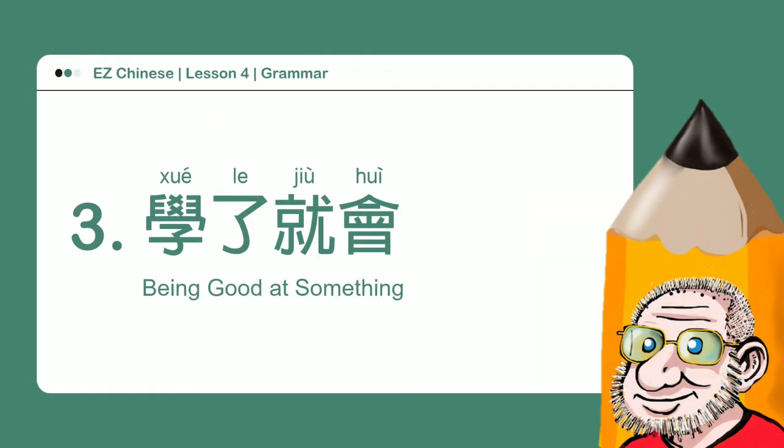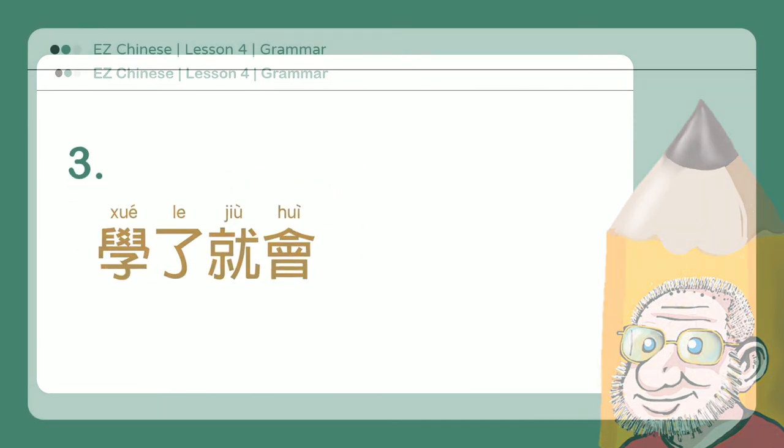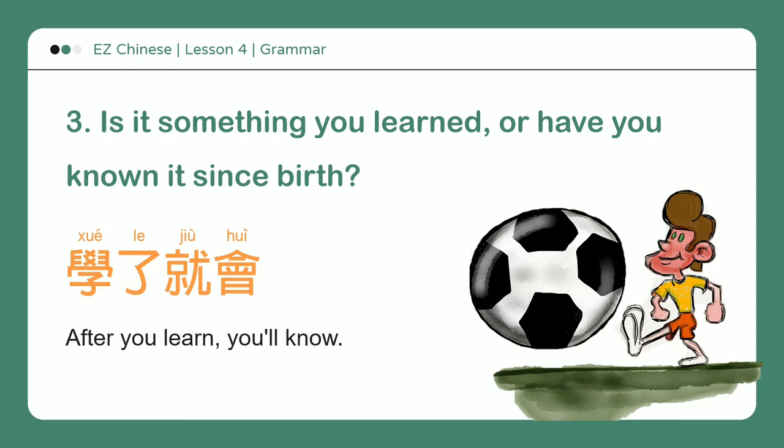学了就会 — Being good at something. Is it something you learned or have you known it since birth? After you learn, you'll know.